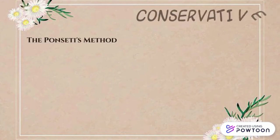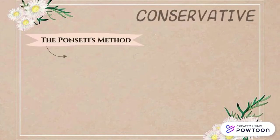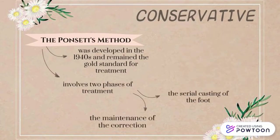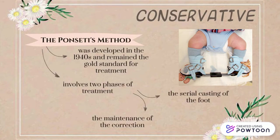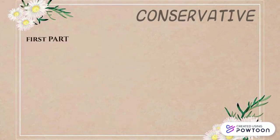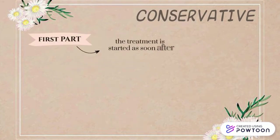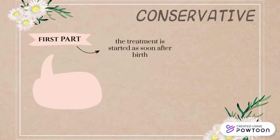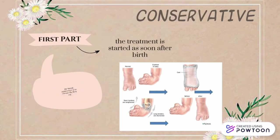For conservative management, the Ponseti method was developed in the 1940s and remains the gold standard for treatment. It involves two phases: the first is serial casting of the foot and the second is maintenance of the correction. Treatment is started as soon as possible after birth with a sequence of correction using weekly serial casts, averaging about 6 weeks. The initial manoeuvre is to elevate the first ray, thereby splitting the forefoot along the talar head with the hindfoot.